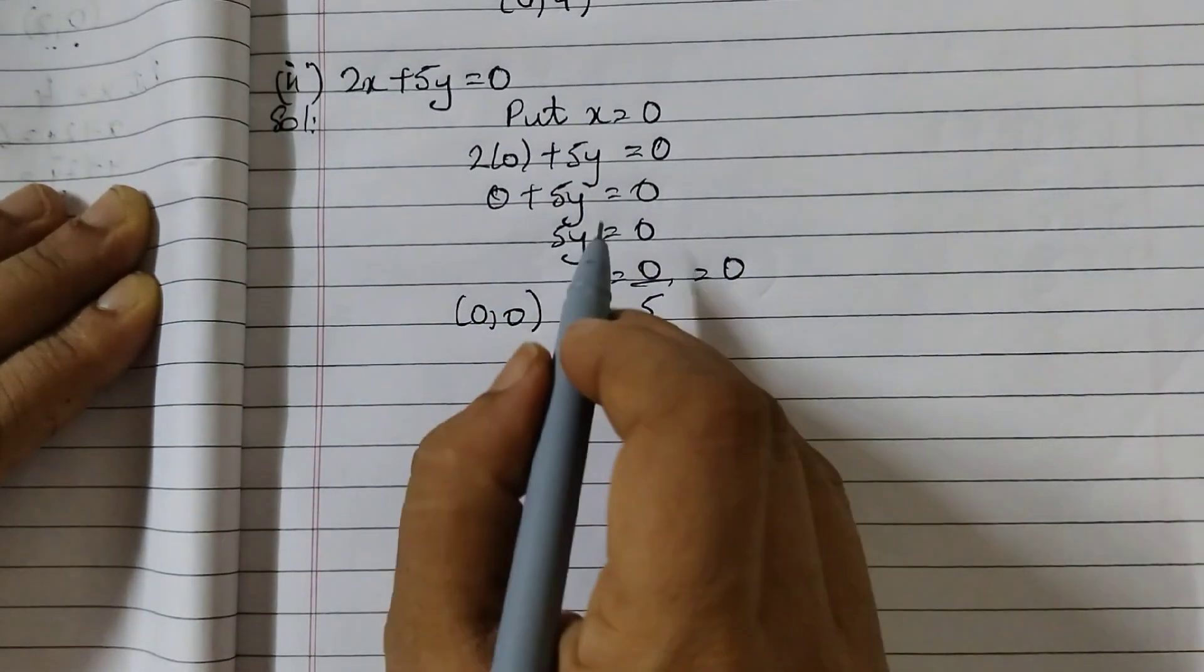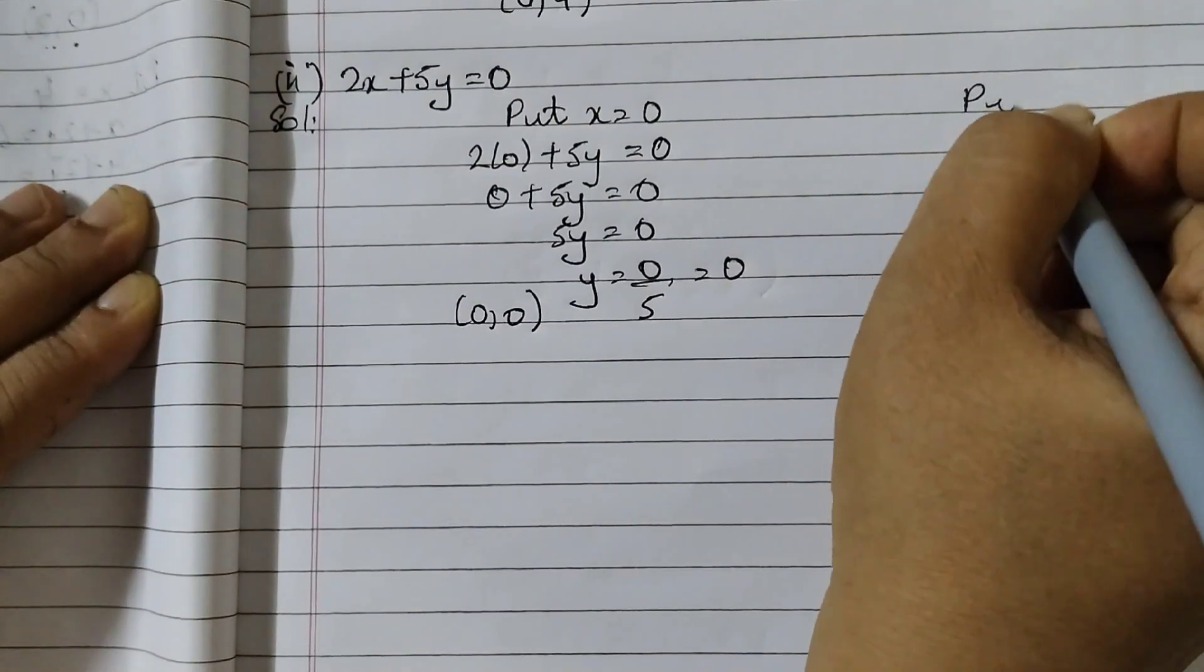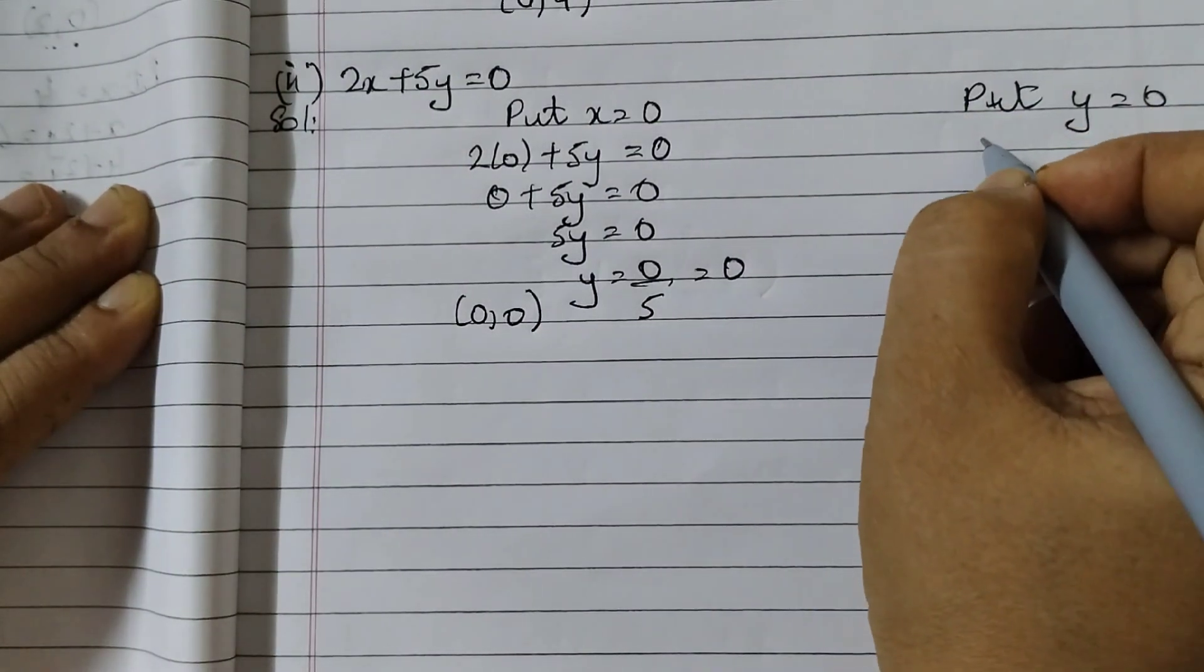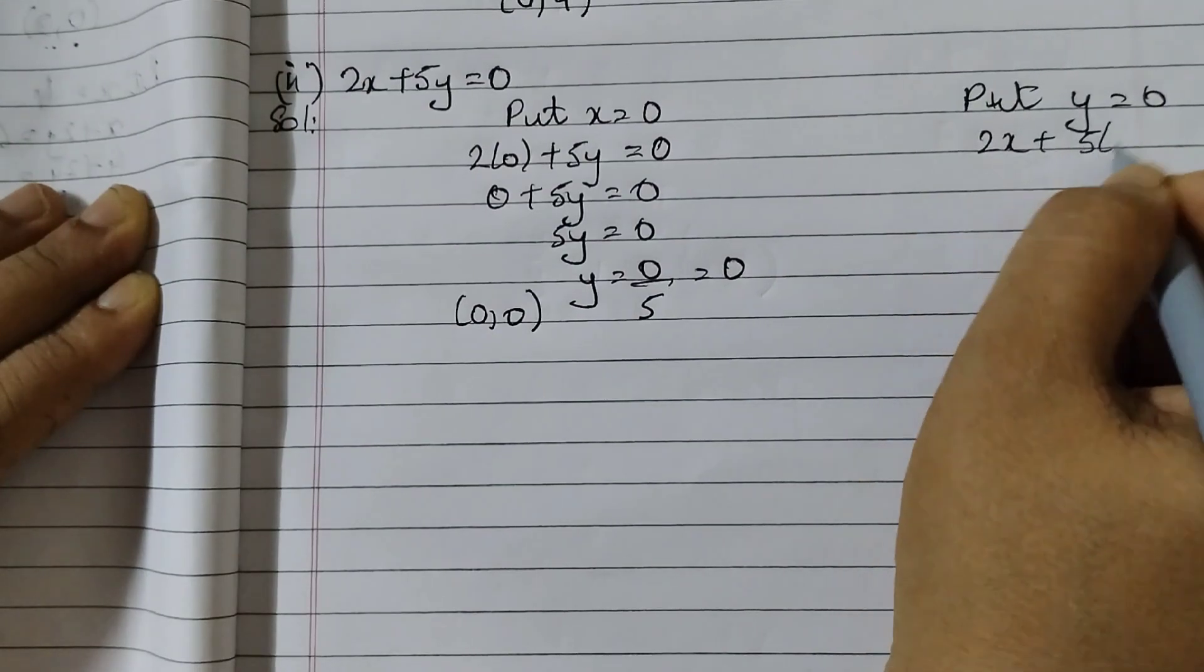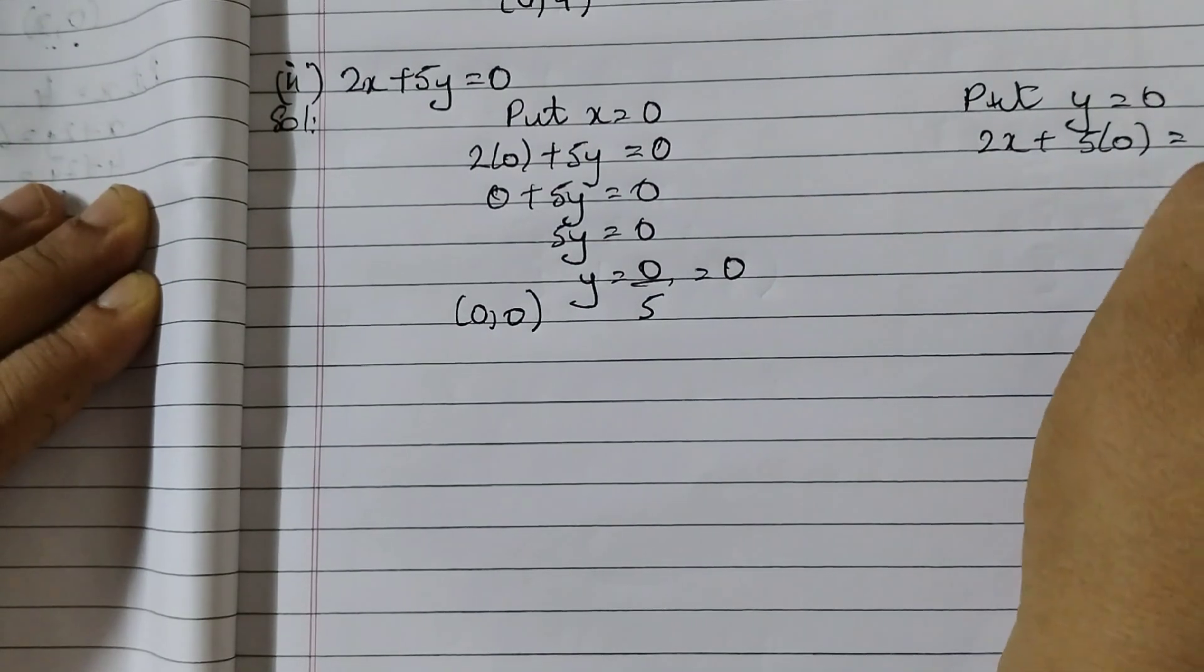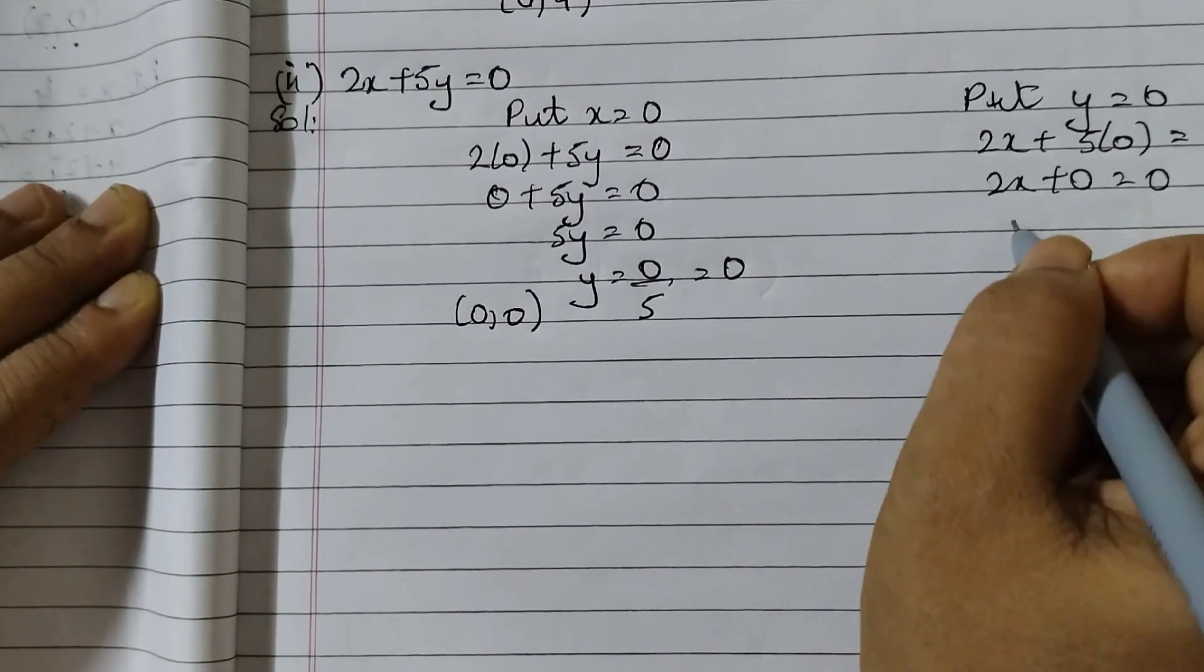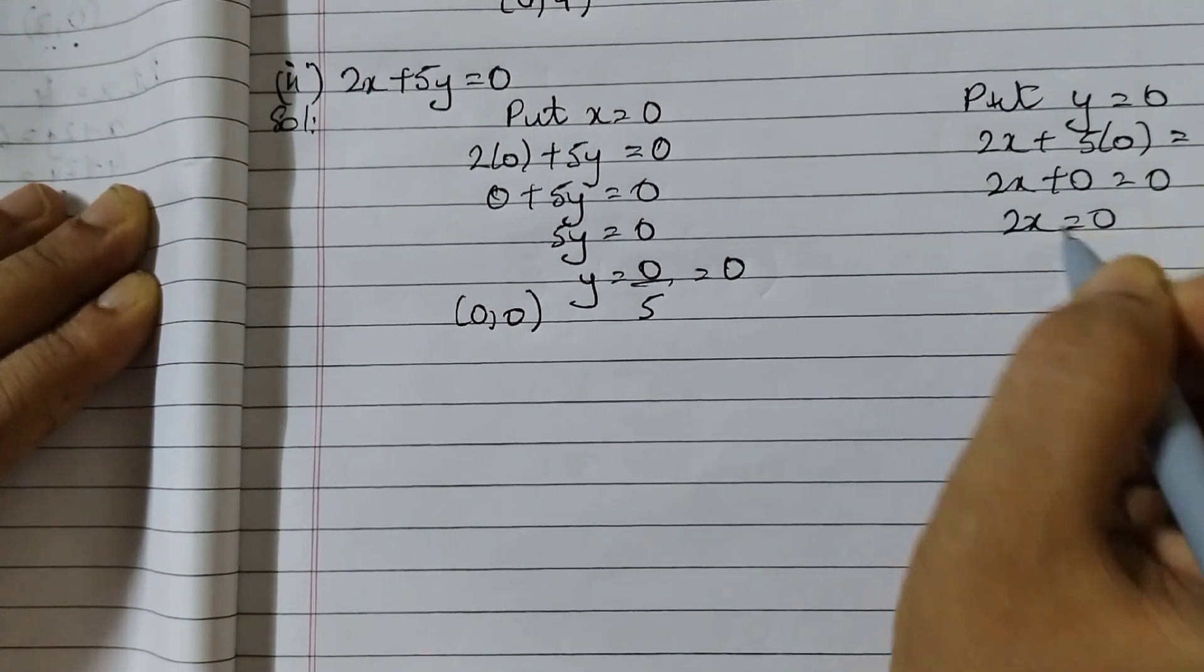So if I put y equals to 0. So 2x plus 5 into 0 is equal to 0. 2x plus 0 equals to 0. 2x equals to 0.